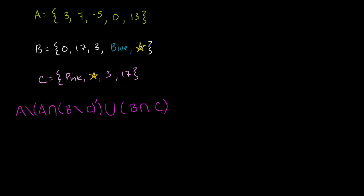Let's use our understanding of operations on sets to get some blood flowing to our brains. I've defined some sets here, and to make things interesting, I haven't only put numbers in these sets — I've even put some colors and some little yellow stars. I want you to figure out what this set would be, this crazy thing that involves relative complements, intersections, unions, and absolute complements. I encourage you to pause and try to figure it out.